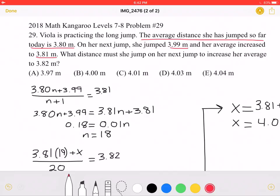I have written 3.8n plus the jump that is 3.99. And again, n is the number of jumps she has done so far. Over n plus 1 must equal her new average of 3.81.